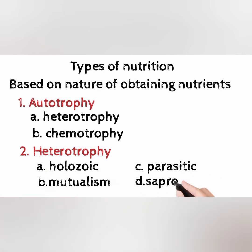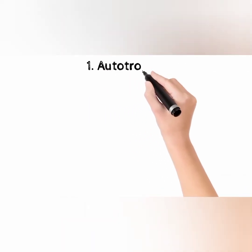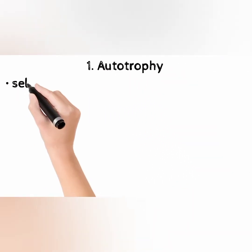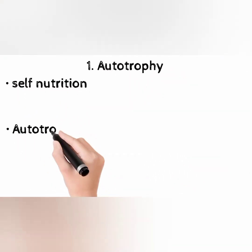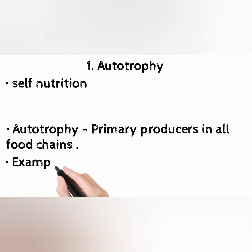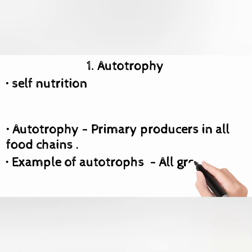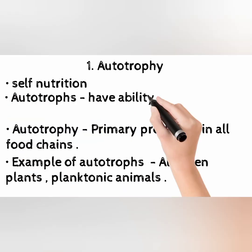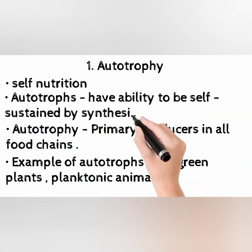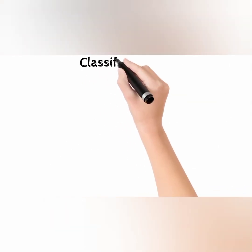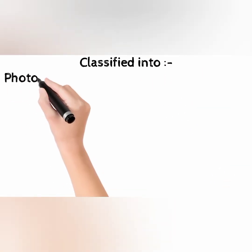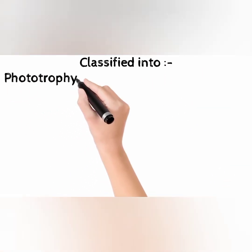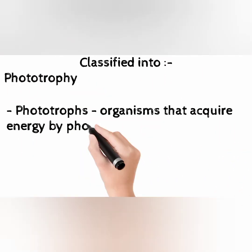Autotrophy is self-nutrition. Autotrophs have the ability to be self-sustained by synthesizing their own food. Autotrophs are primary producers in all food chains. Examples of autotrophs include all green plants and planktonic algae. Autotrophs are classified into phototrophy and chemotrophy.